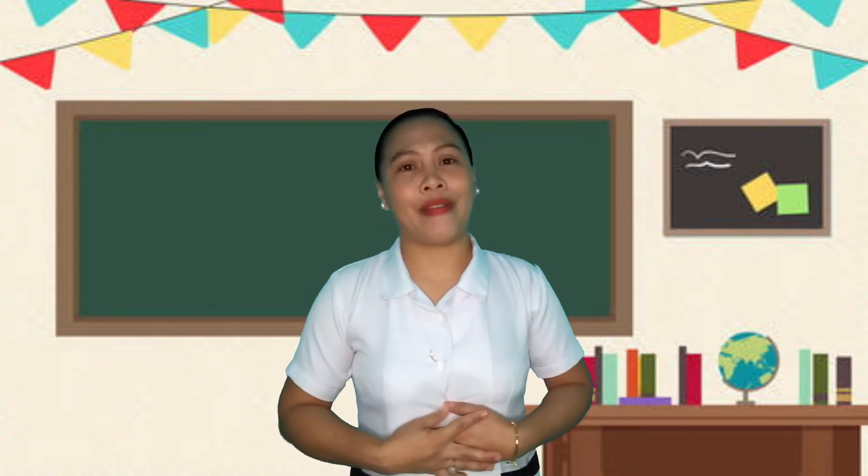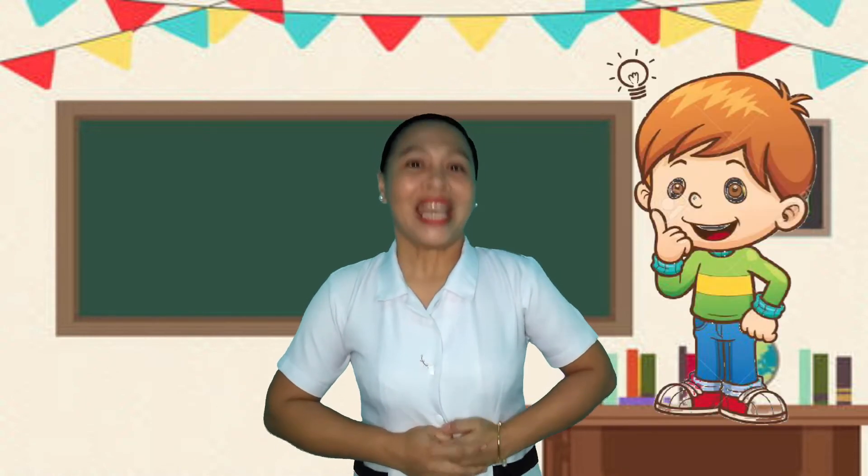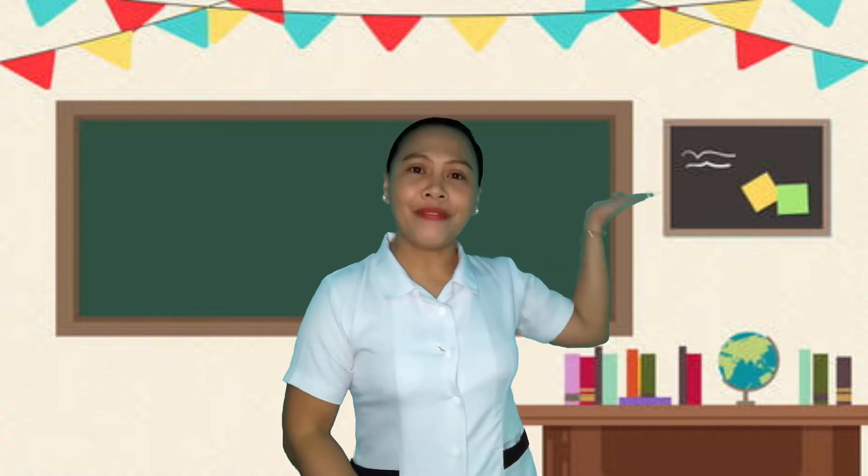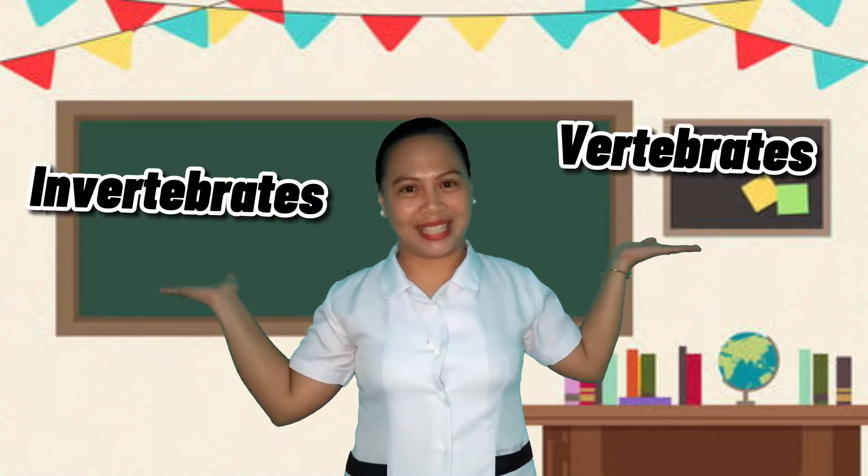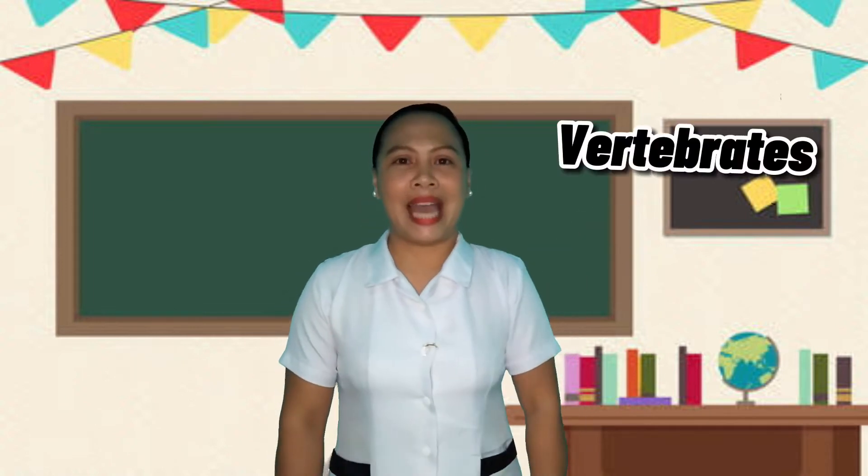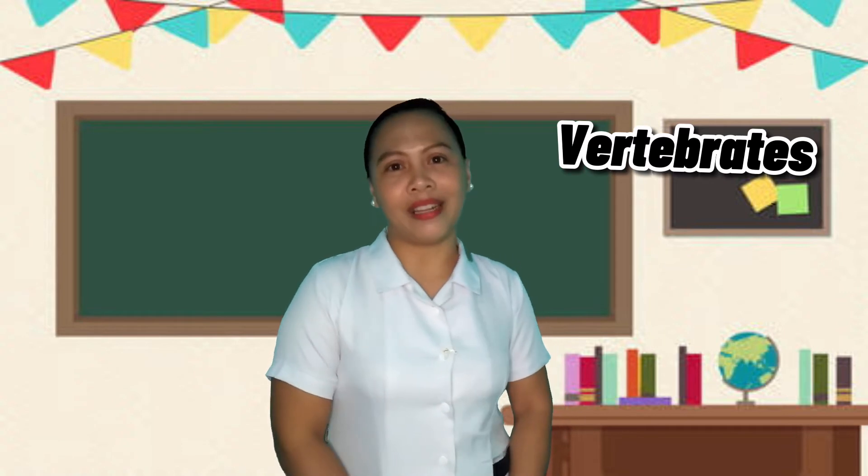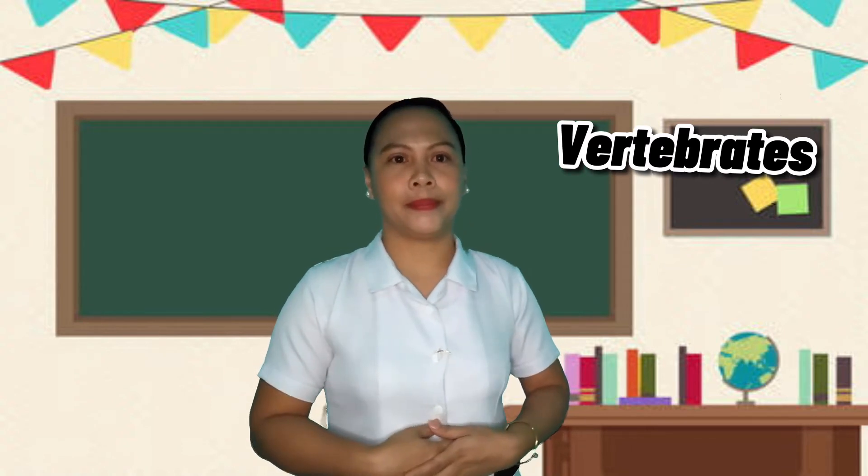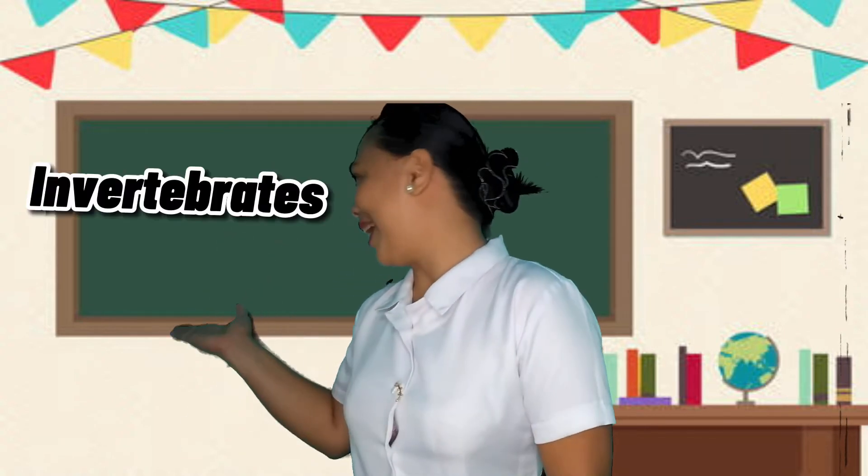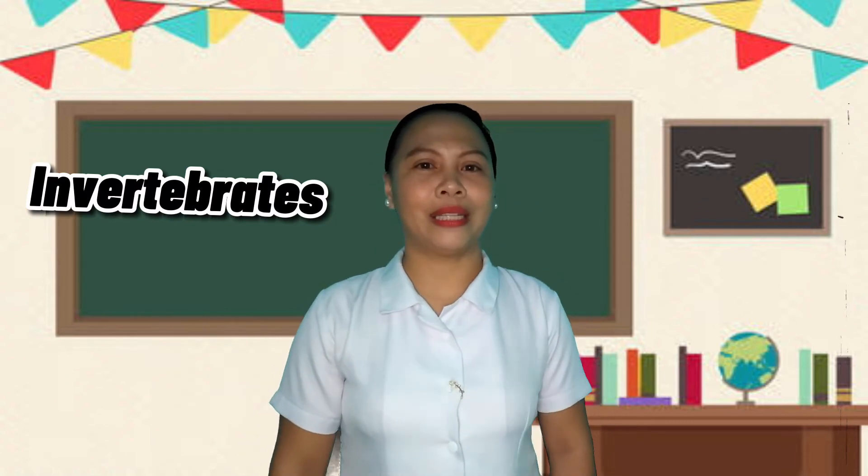Now, can you still remember our previous lesson? Very good! We talked about vertebrates and invertebrates. When we say vertebrates, it is an animal with a spinal cord surrounded by a cartilage or a bone. While invertebrates are animals without a backbone.